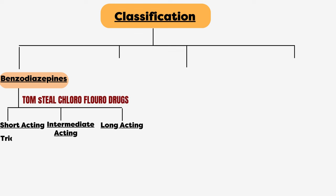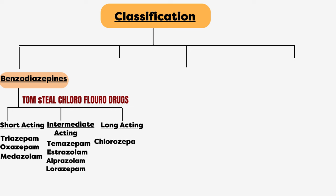Here T stands for triazolam, O for oxazepam, M for midazolam, ignoring the S and starting from T: temazepam, estazolam, alprazolam, lorazepam, clorazepate, flurazepam, and diazepam.